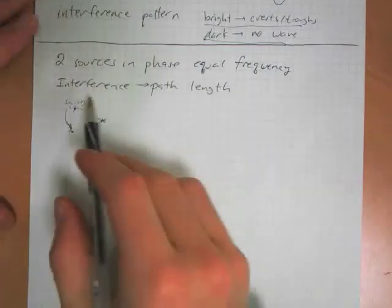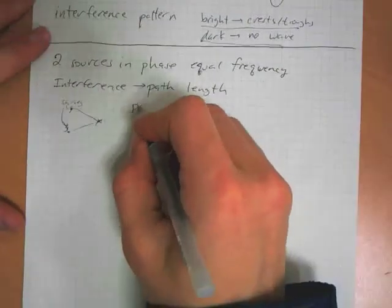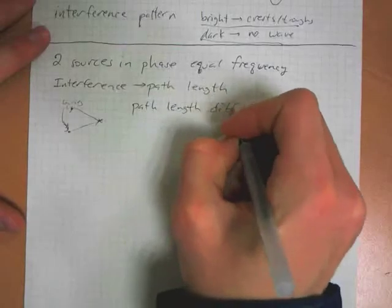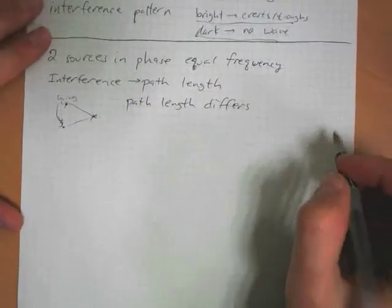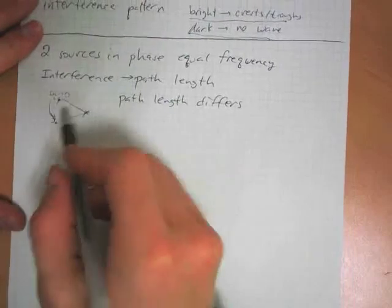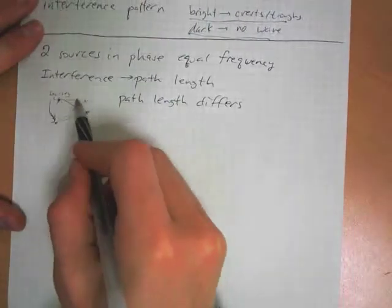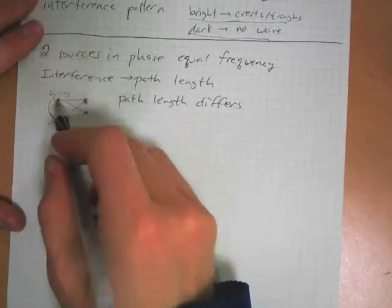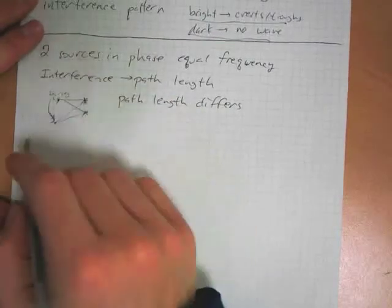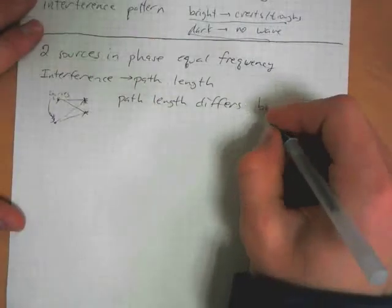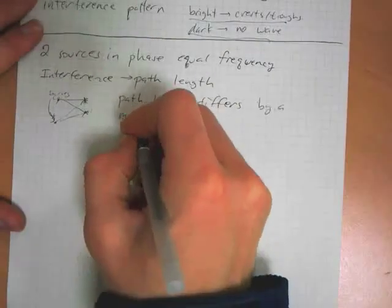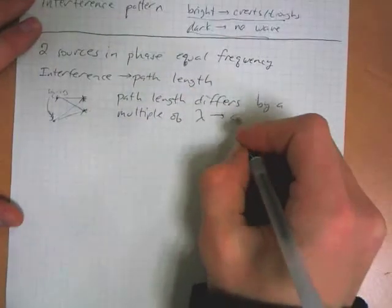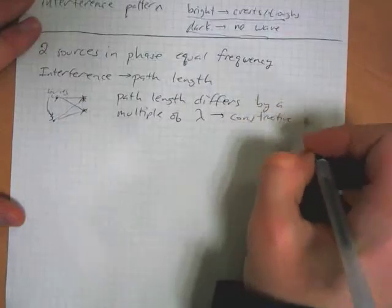But then, if the path length differs by a certain amount, then they'll interfere in different ways. So if we're here, say for example, at some other point, and say the path length is different, if the path length differs by a full wavelength, well then they're going to be in phase again, they're going to interfere constructively. So if the path length differs by a multiple of the wavelength, then we're going to have constructive interference.